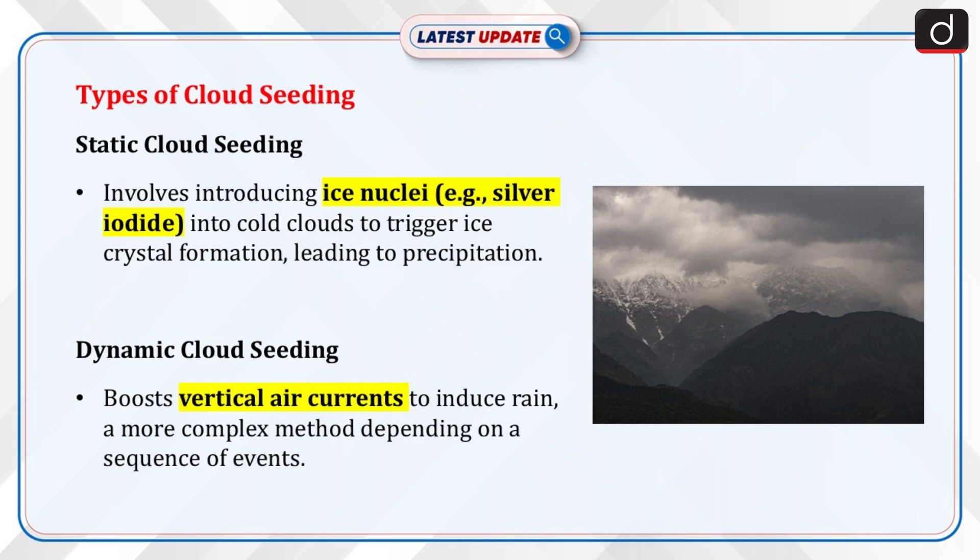Second, Dynamic cloud seeding: this is a method of inducing rain by boosting vertical air currents. The process is considered more complex than static cloud seeding because it depends on a sequence of events working properly.